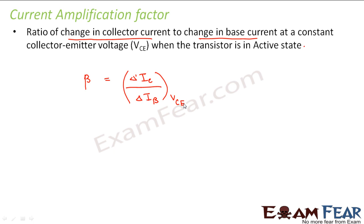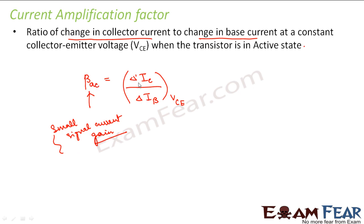This is the current amplification factor, and beta is often known as the small signal current gain — also termed the AC current gain. Similarly, we define the DC current gain as I_C divided by I_B. This is how we define the current gain or current amplification factor in case of a transistor.